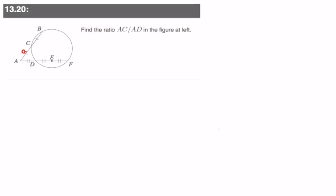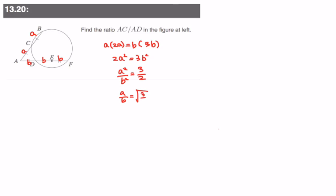Find the ratio of AC to AD. We realize AC equals CB, so call that A; and AD equals DE equals EF, so call that B. Setting up: A times 2A (outer times whole) must equal B times 3B. We get 2A squared equals 3B squared. To find the ratio, A squared over B squared equals 3 over 2. Taking the square root gives square root of 3 over 2, which rationalized is square root of 6 over 2.